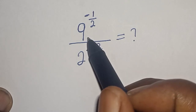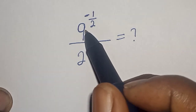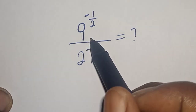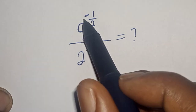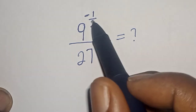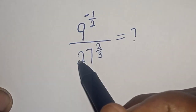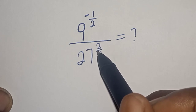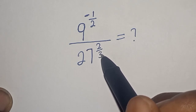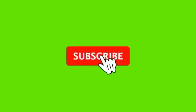Hello, welcome to math. In this class we quickly want to evaluate this math problem: 9 to the power of minus 1 over 2, divided by 27 to the power of 2 over 3.